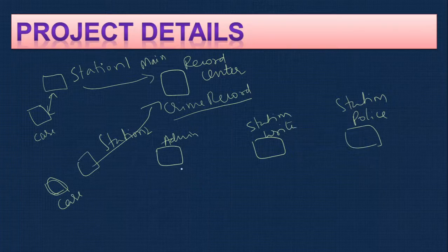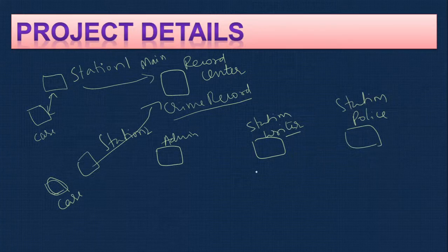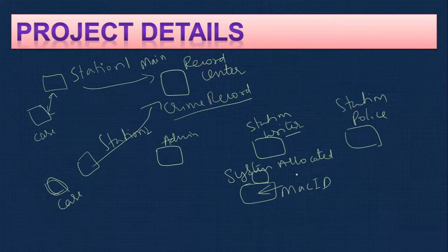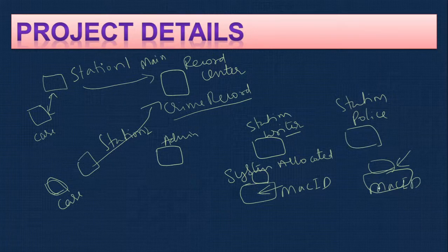It will have three modules. One is the admin module, where all basic entries can be created. Then there is the station writer, who can register cases and enter all criminal details. And there is the police station module. Other persons should not access the site — even the writer should only access it from his office. To control this, we can allocate the MAC ID of the system, so only that allocated system can access the application. Any other system cannot log in or enter data. This is also one important feature of this project — how to read the MAC ID and check whether the user is logging in from the correct system.